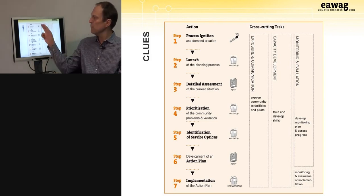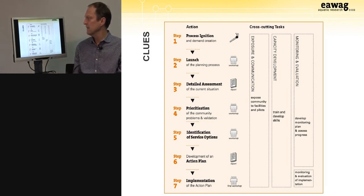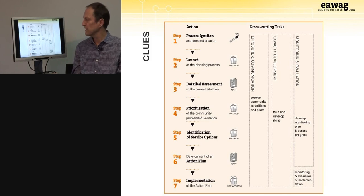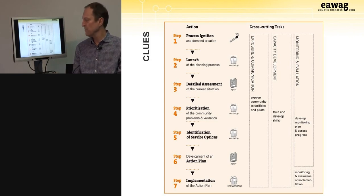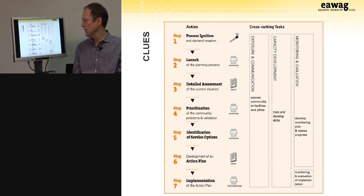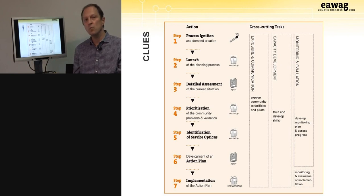CLUES also has three cross-cutting tasks: exposure and communication, where the community and stakeholders are exposed to other pilot projects or facilities built nearby; training and capacity development, building skills at local, city, and neighborhood level; and monitoring and evaluation of the entire planning process and of the implementation once it begins.